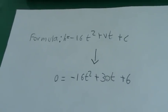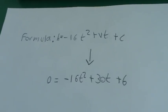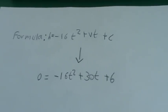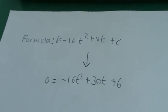For this problem, you need the vertical motion formula, which is h = -16t² + vt + c.